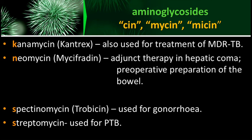Neomycin also prevents complications that can affect the brain, since excessive ammonia in the blood can damage and irritate the brain. It is also given during pre-operative preparation of the bowel — for example, when a patient undergoes surgical operation on the intestinal tract — to reduce bacteria that might spread to other organs and cause infection. Neomycin can be given as a prophylaxis in this setting.